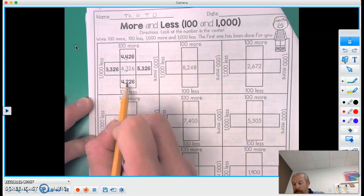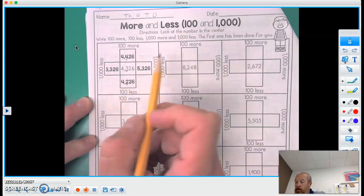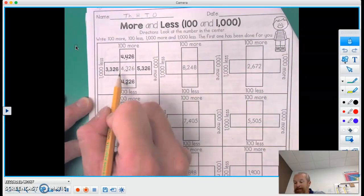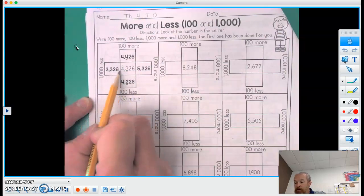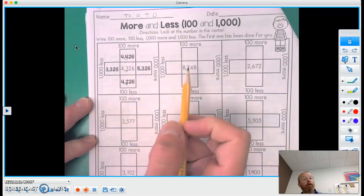100 less than that is 4,200. 1,000 more, 1,000 less. So now we look at the thousands column. Here's 1,000 less, here's 1,000 more.